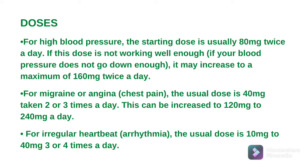Doses: For high blood pressure — starting dose usually 80 mg twice a day; अगर blood pressure control नहीं हो तो maximum 160 mg twice a day। For chest pain (angina pectoris) — usual dose is 40 mg two to three times a day। For arrhythmia (irregular heartbeat) — usual dose is 10 mg to 40 mg three to four times a day।